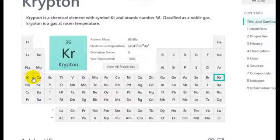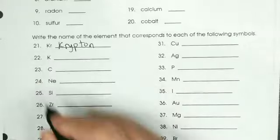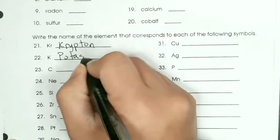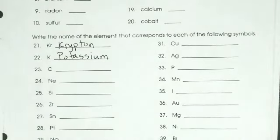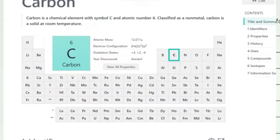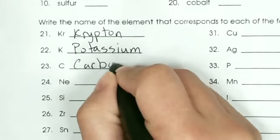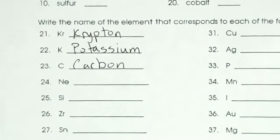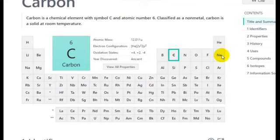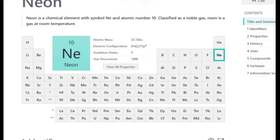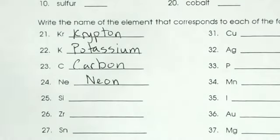Next we have K, and if we look to the left side of the periodic table, it is potassium. It is one of those elements where the name and symbol are different from each other. Number 23, C, that is carbon. Number 24, Ne, is neon.